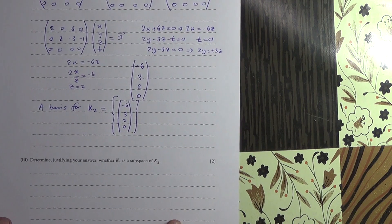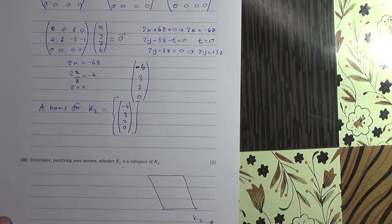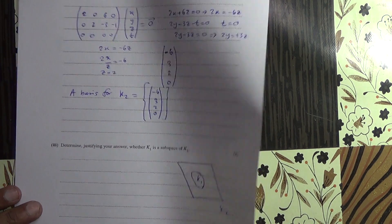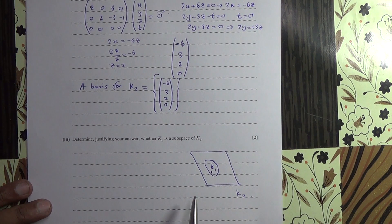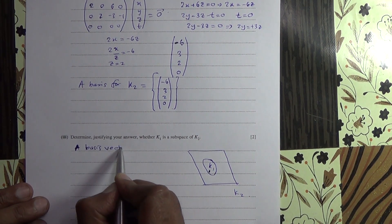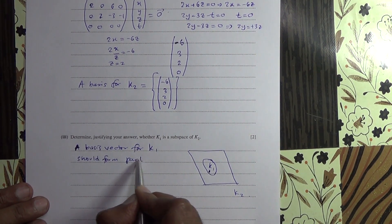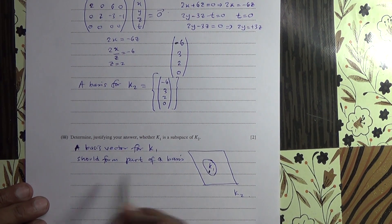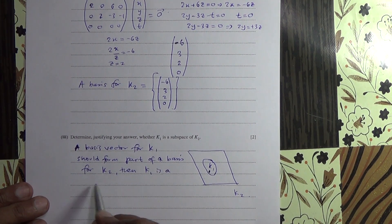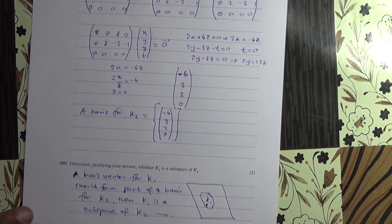Now for the last part of this question, determine justifying your answer whether k1 is a subspace of k2. If k1 should be a subspace of k2, it's a subset. So then a basis vector for k1 should form part of the basis for k2. A basis vector for k1 should form part of a basis for k2. Then k1 is a subspace of k2. Here we are. That should be the last part of the question. Take care.